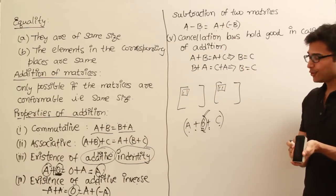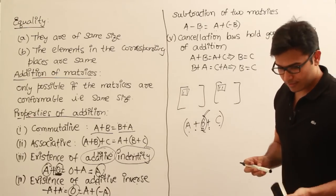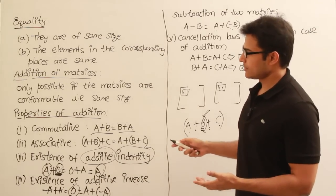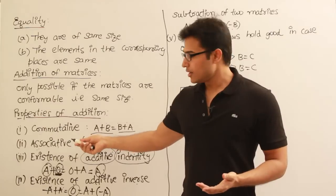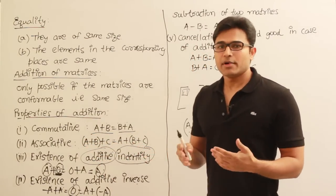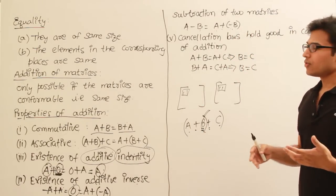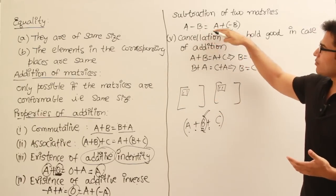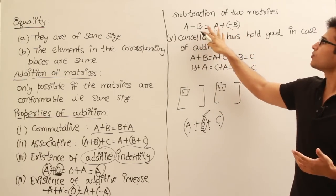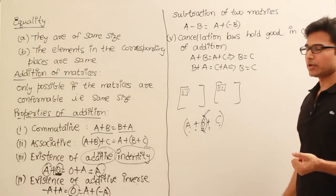Even though subtraction is a kind of addition, you need to be careful — you cannot directly say that subtraction is commutative or that subtraction is associative. There have to be modifications. Subtraction is not very heavily stressed, but if you apply some modifications to the subtraction equation you can check whether the rules are valid or not.